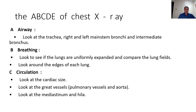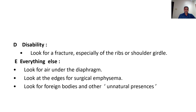The ABCDE system of reading X-rays is used to remember what elements to look for. A stands for airway — look at the trachea, right and left main bronchi, and the intermediate bronchus. B for breathing — look at the lungs, ensure they are symmetrical and uniformly expanded, and look around the edges of each lung. C stands for circulation — look at cardiac size, the great vessels, pulmonary vessels, aorta, mediastinum, and hila. D for disability — look for fractures, especially of the ribs or shoulder girdle. E for everything else — air under the diaphragm, surgical emphysema, foreign bodies, and other unnatural presences.